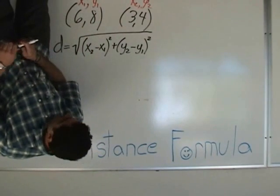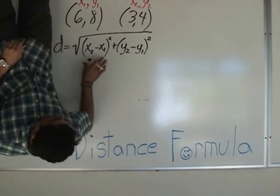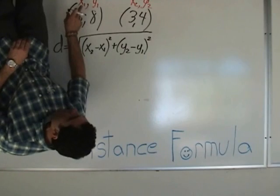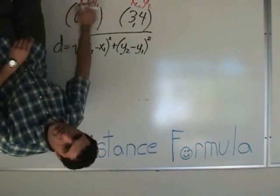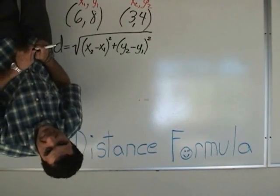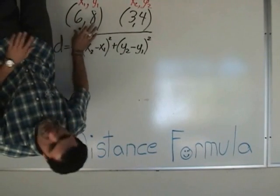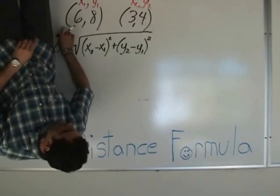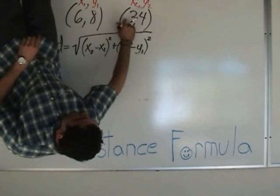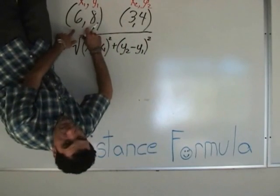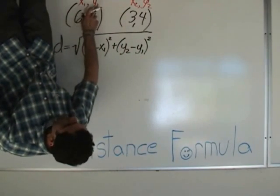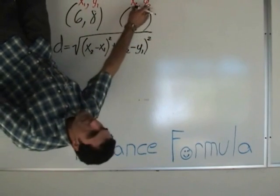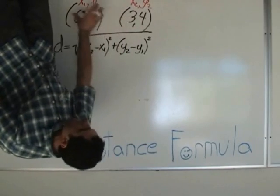Student: Wait, but why does it say x2 minus x1 under it? Teacher: Our first x, y point we label with ones — so (6, 8) is x1 and y1. Our second x, y point we label with twos — so (3, 4) is x2 and y2. This is our first point, that is our second point. What this means is we're going to subtract the two x's and square it.